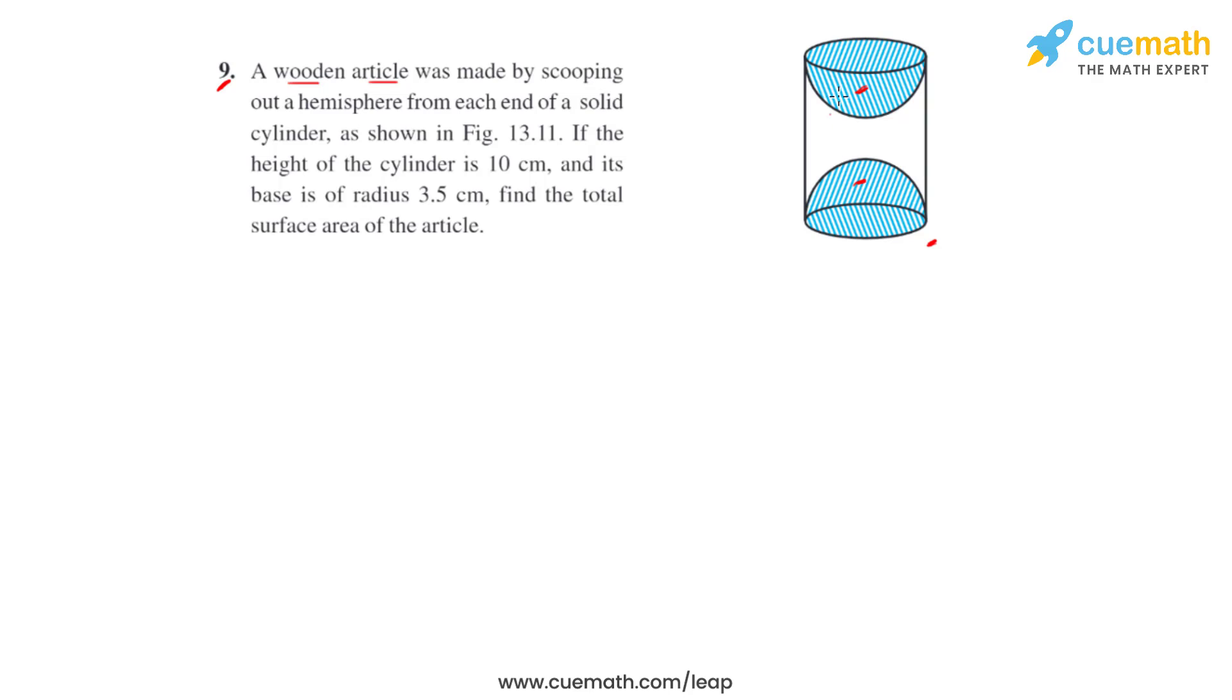The hemispheres are scooped out of a cylinder. Now, if the height of the cylinder is 10 centimeters and its base is of radius 3.5 centimeters, we have to find the total surface area of the article made.